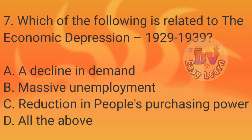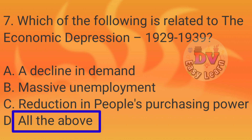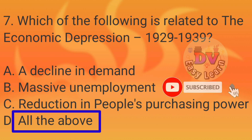Question number 7: Which of the following is related to the economic depression of 1929–39? Correct answer: All of the above — a decline in demand, massive unemployment, and reduction in people's purchasing power.